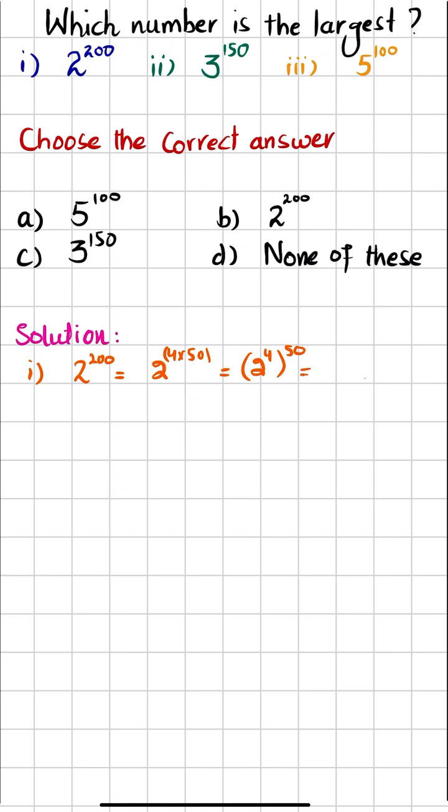And this 2 power 4 multiply by 50 can be written as 2 power 4 power 50. And we can write 2 power 4 is equal to 16, because 2 twos are 4, 4 twos are 8, 8 twos are 16. So 16 power 50.